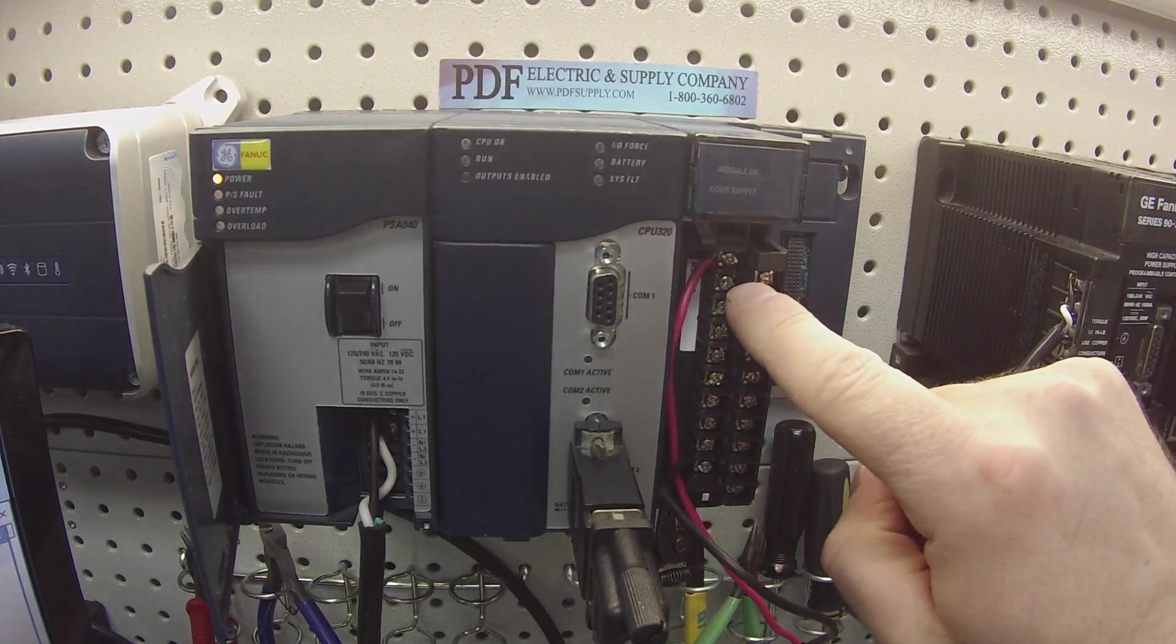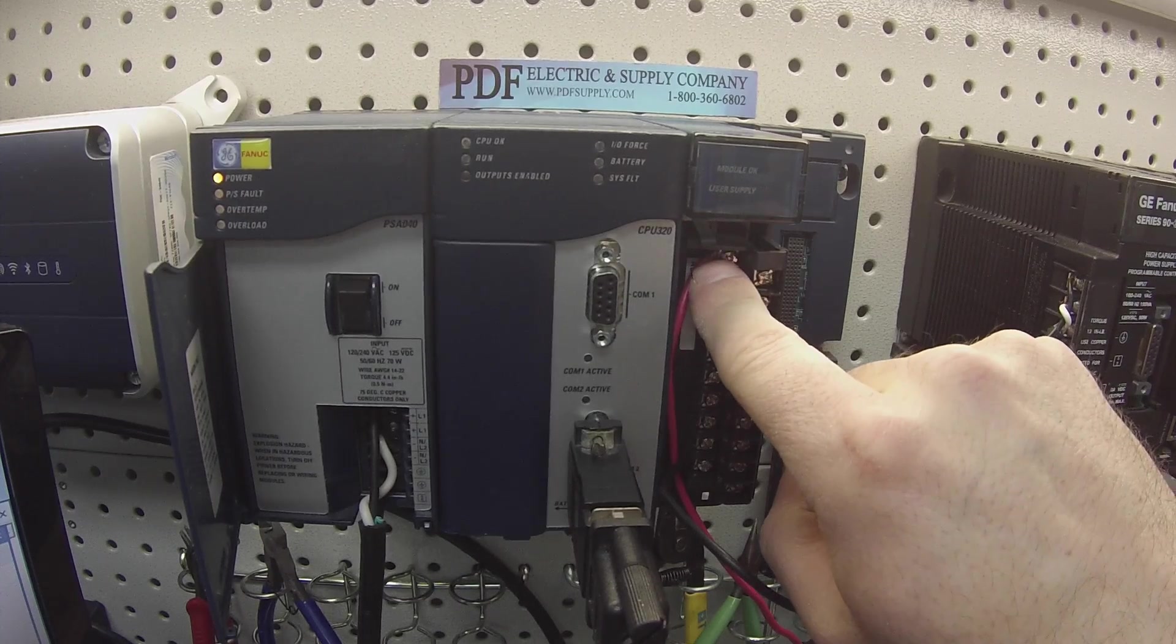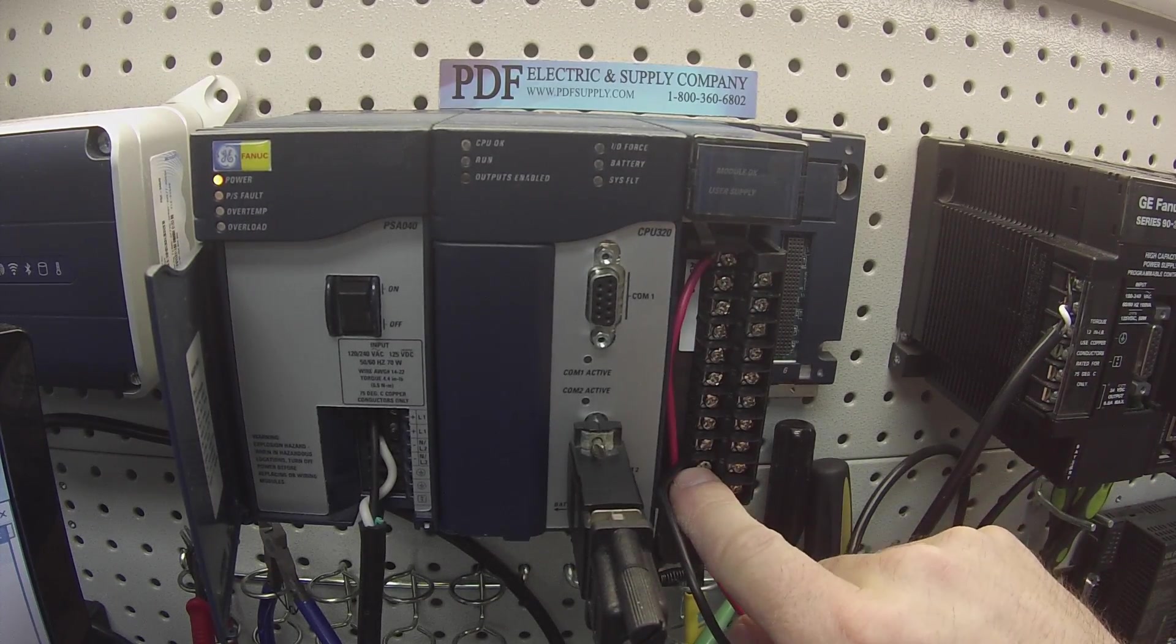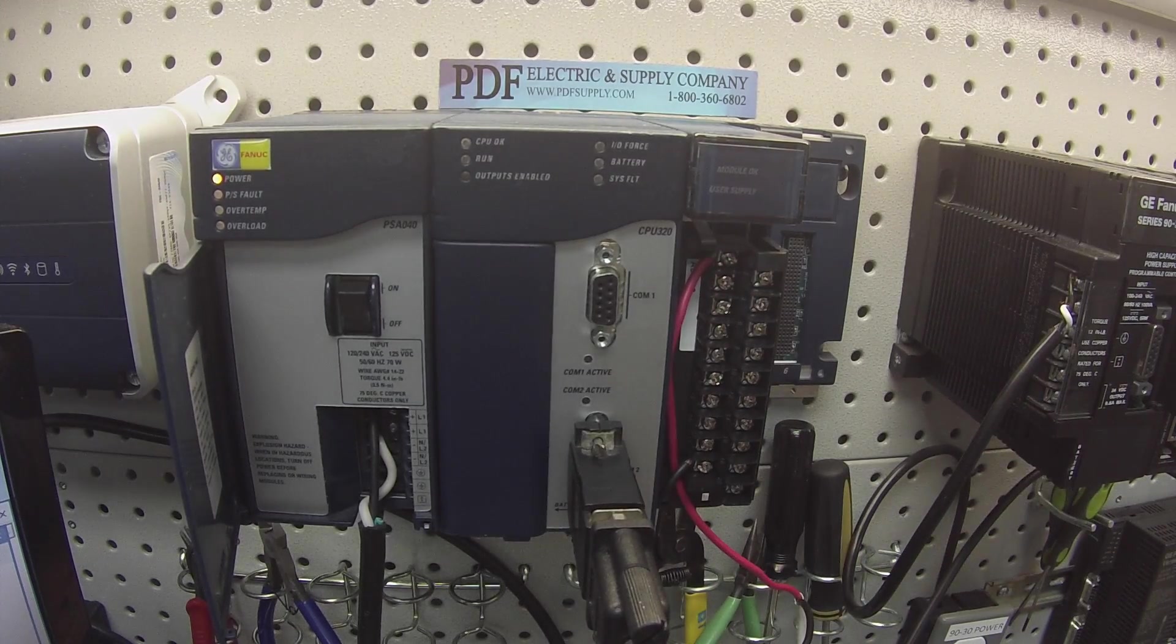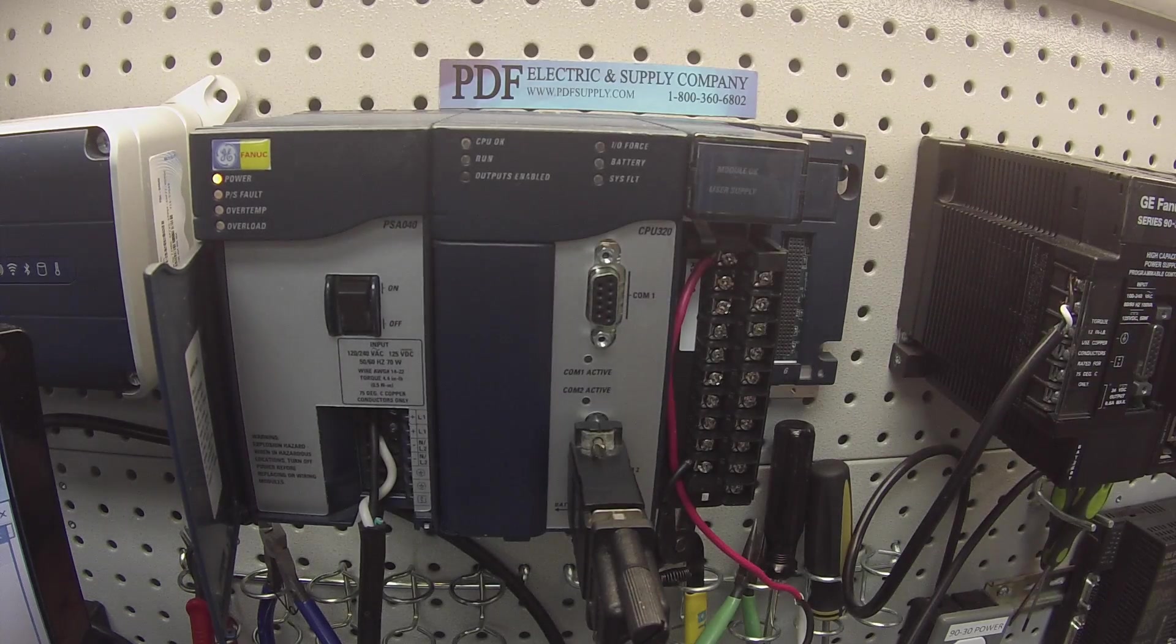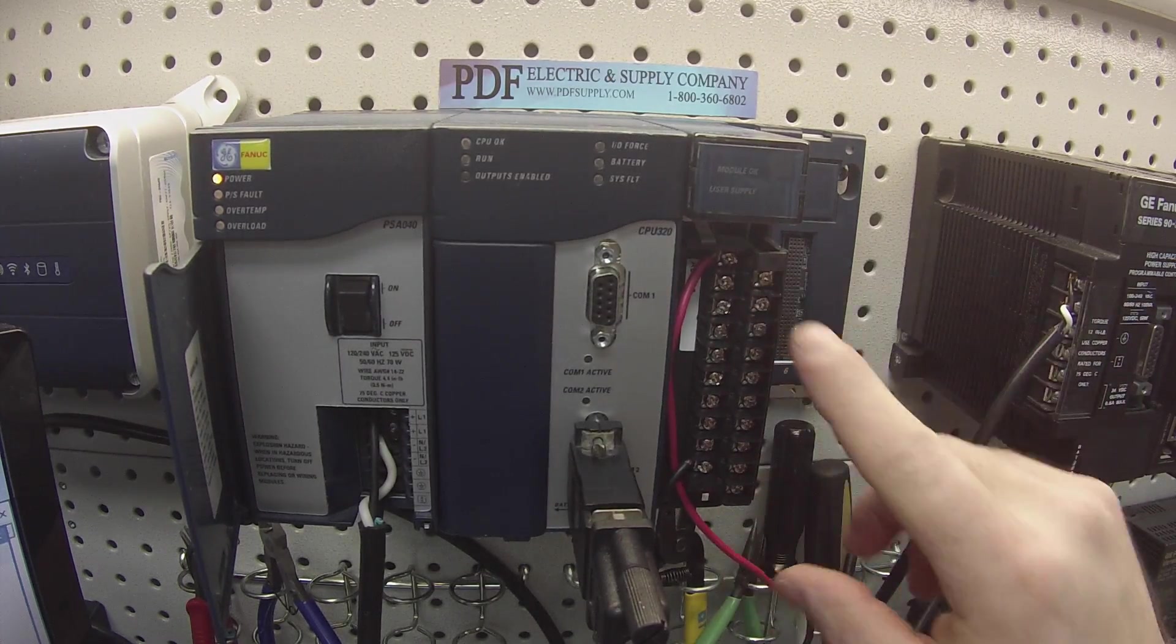You can see that on my terminal one, I have my positive lead from the power supply connected, and on number 19, I have my negative lead from the 24 volt power supply connected. We will be showing you guys the wiring diagram. Just in order to be able to touch these terminals while it's activated, I wanted to keep this open.